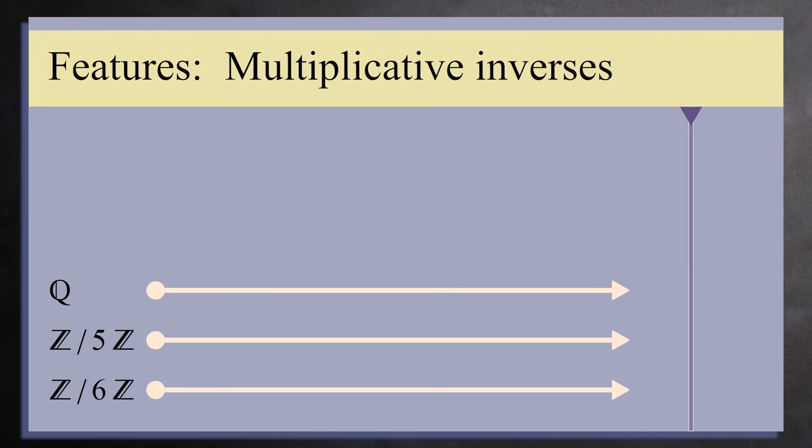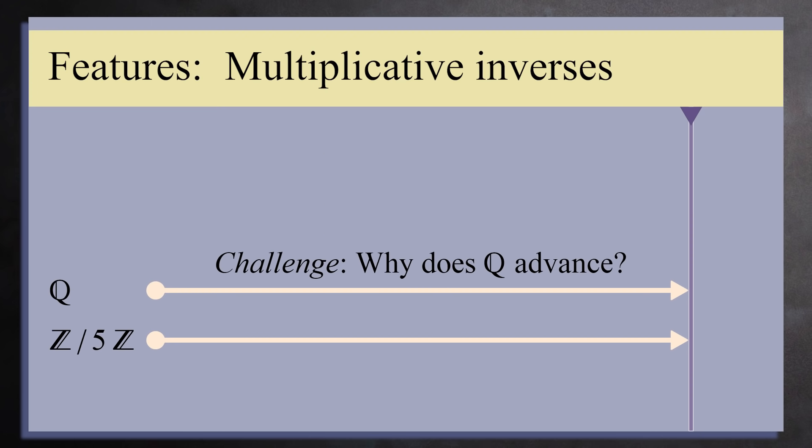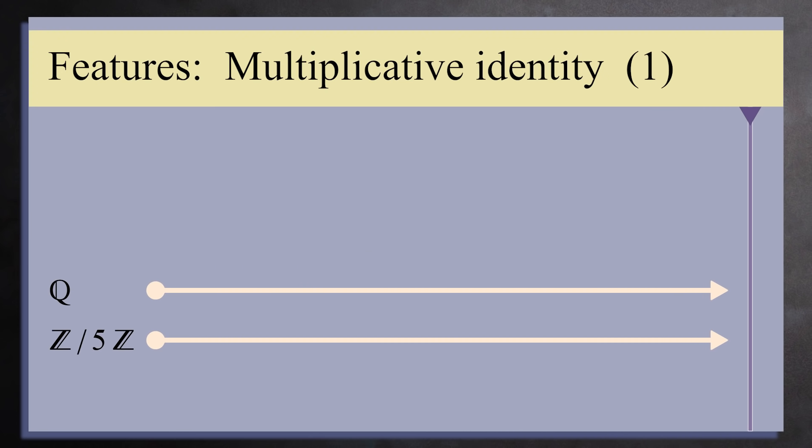And we lose the integers mod 6 as well. 2, 3, and 4 do not have inverses mod 6. Mod 5, however, is different. Here, every non-zero number has a multiplicative inverse. You can check this by looking at the multiplication table for this set. So the only 2 sets to advance are the rational numbers and the integers mod 5. By the way, these 2 sets both have a multiplicative identity 1. This is not a surprise, since the product of a number and its multiplicative inverse is 1.